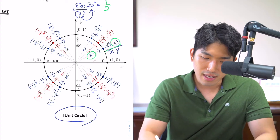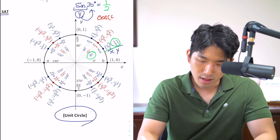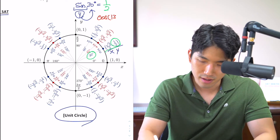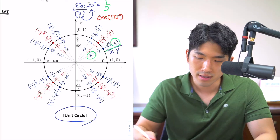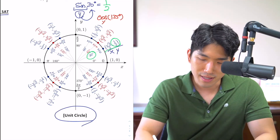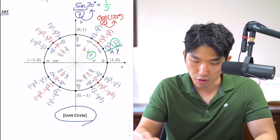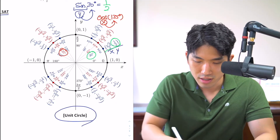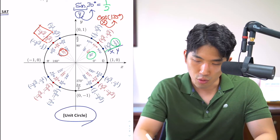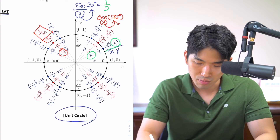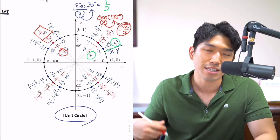Another example: if it's asking for cosine of 135 degrees, how do we interpret this? It's just asking you to find what the X value is when your angle is 135 degrees. So we go to 135 degrees on the unit circle, look at the coordinates, and find the X coordinate. The X coordinate is going to be negative root 2 over 2. That's going to be your answer.